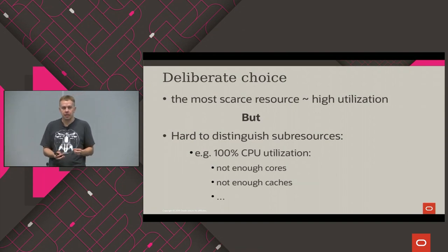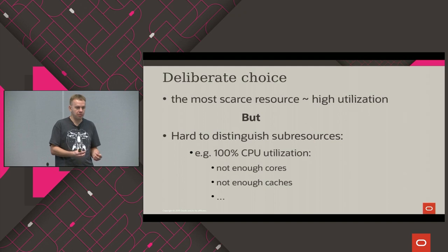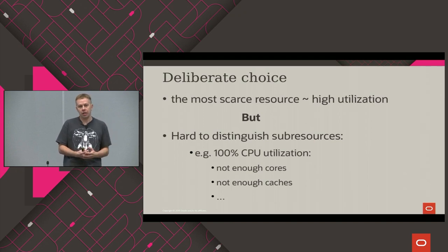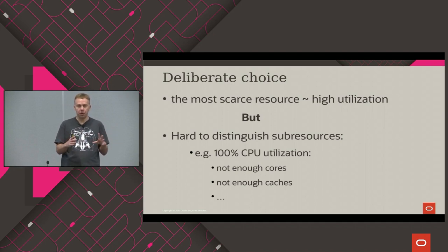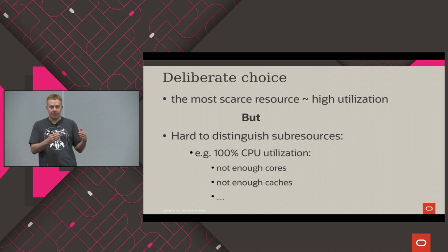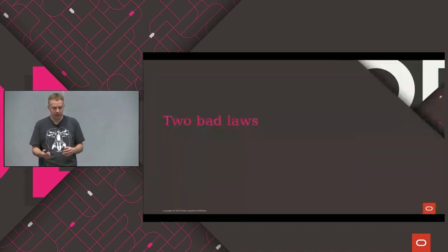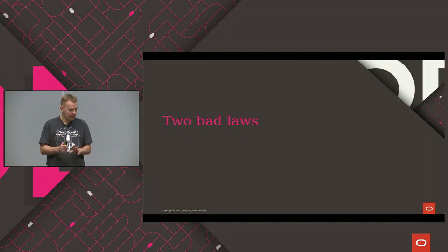To understand resource utilization, the most typical way is looking at utilization of that resource. But there's a big pitfall: if you look at basic charts and monitors, you might see 100% CPU utilization. Unfortunately, you have to look deeper and understand different parts of your CPU, because 100% CPU utilization doesn't tell you what happened inside your CPU — it could be very different problems.